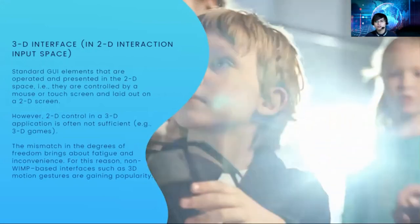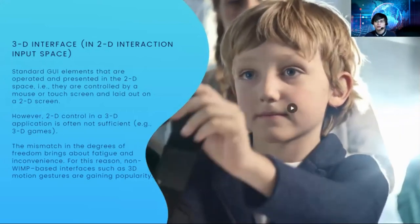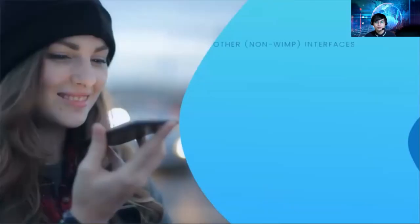Next is the 3D interface in a 2D interaction input space. Standard GUI elements operated in 2D space are controlled by a mouse or touchscreen and laid out on a 2D screen. However, 2D control in a 3D application is often not sufficient — for example, in 3D games. The mismatch in degrees of freedom brings about fatigue and inconvenience. For this reason, non-WIMP-based interfaces such as 3D motion gestures are gaining popularity.